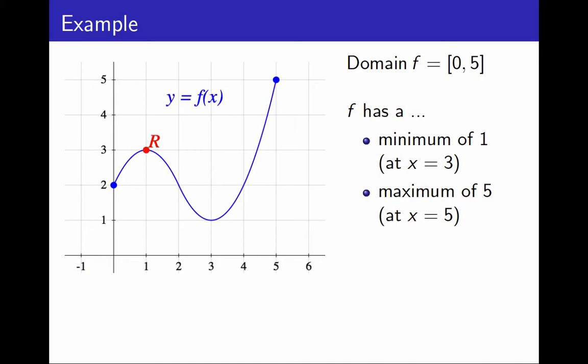However, if I stay close to r only, if I only look at the piece of the graph near r, then it looks like a maximum. I am going to call this point a local maximum. In this example, I say that f has a local maximum at x equals 1.